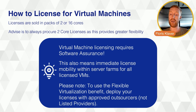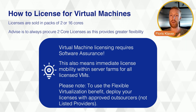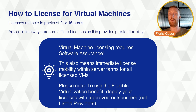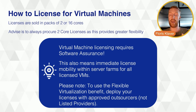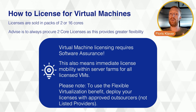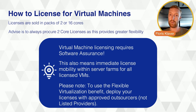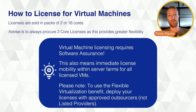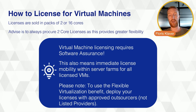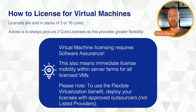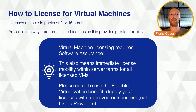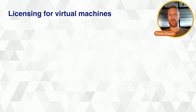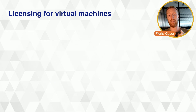Microsoft calls this the Flexible Virtualization Benefit. This means you can use your licenses at outsourcers as well. Prior to October 2022, it was not possible to hand your licenses to an outsourcer to use them to your benefit except in a dedicated motion. Now, if you have Software Assurance, you can give these licenses to your outsourcer to use in their shared environment — a change Microsoft introduced in October 2022.